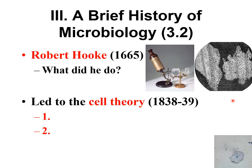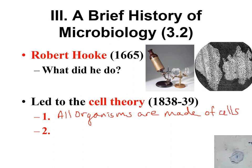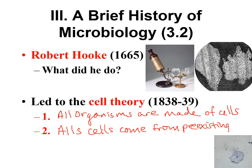That's where the word 'cell' came from, and this eventually led to the cell theory, which some German scientists came up with in the 1830s. The cell theory states that all organisms are made of cells, and the second part says that all cells come from pre-existing cells. I would definitely know the two parts of the cell theory — that would be a good test question.